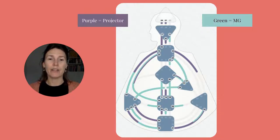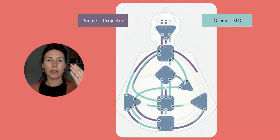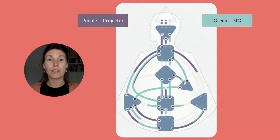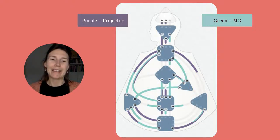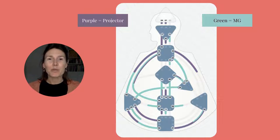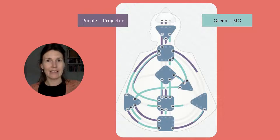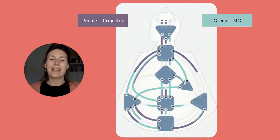Gate 16 is the gate of skills, and the projector in this example has that gate, so together we create the channel of talents. The projector also has, from the throat to the ajna, the channel 62-17 — the channel of acceptance — which is all about organizing, bringing structure, opinions, and details. This channel is also part of the same logical circuitry, on the left side of the body graph.